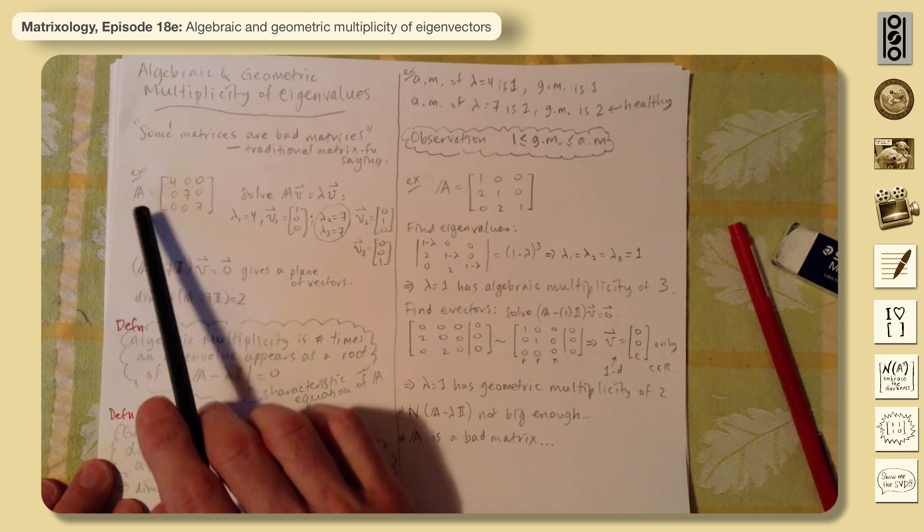We know there's some eigenvector here. There has to be at least one direction that 7 is associated with. And if you go through and solve it, you would end up with these two, here are two basis vectors for the space, and it's the y-z plane, actually.